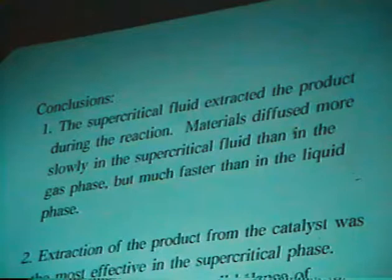Let me conclude our presentation. First, supercritical fluid extracted the products during the reaction. The synthesis gas diffused more slowly in the supercritical fluid than in the gas phase, but much faster than in the liquid phase. Second, extraction of the product from the catalyst was most effective in the supercritical phase, attributed to the balance between desorption from the catalyst surface and diffusion inside the catalyst pores. At last, not only the heat transfer but also the mass transfer was so quick that the secondary reactions of primary alpha-olefin were suppressed. Thanks to the engineering foundation of the graduate school, the University of Tokyo. Thank you very much.